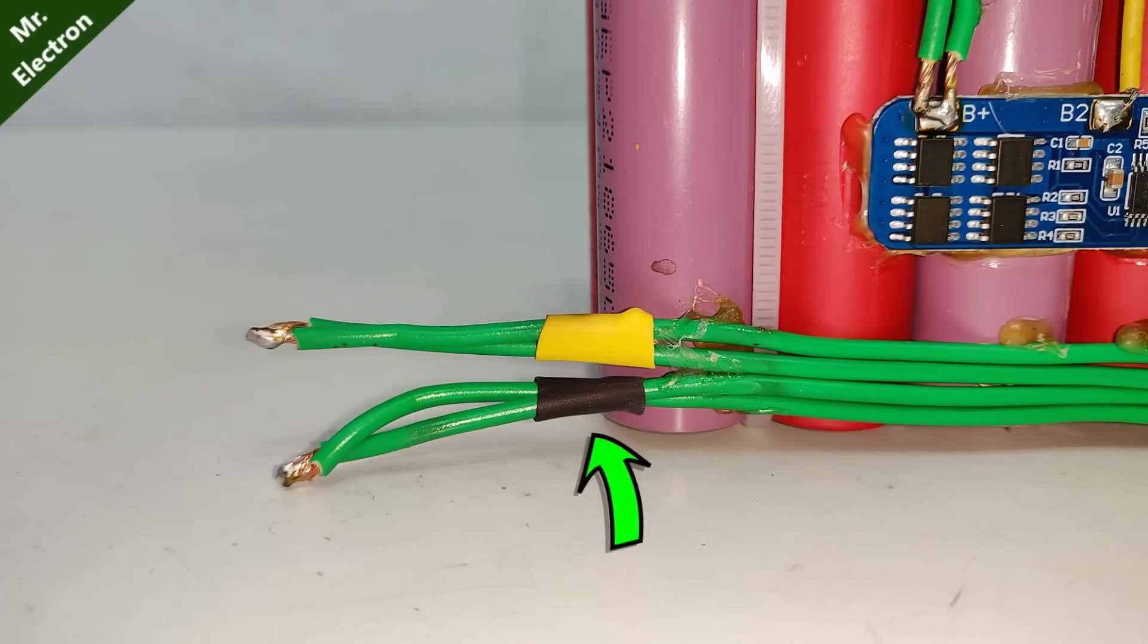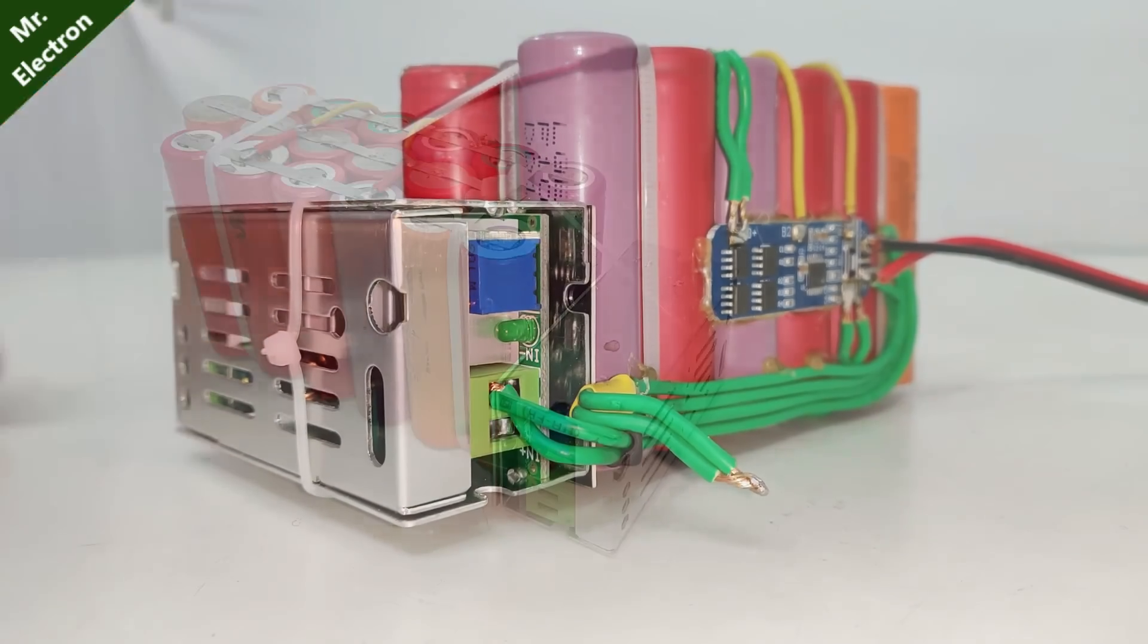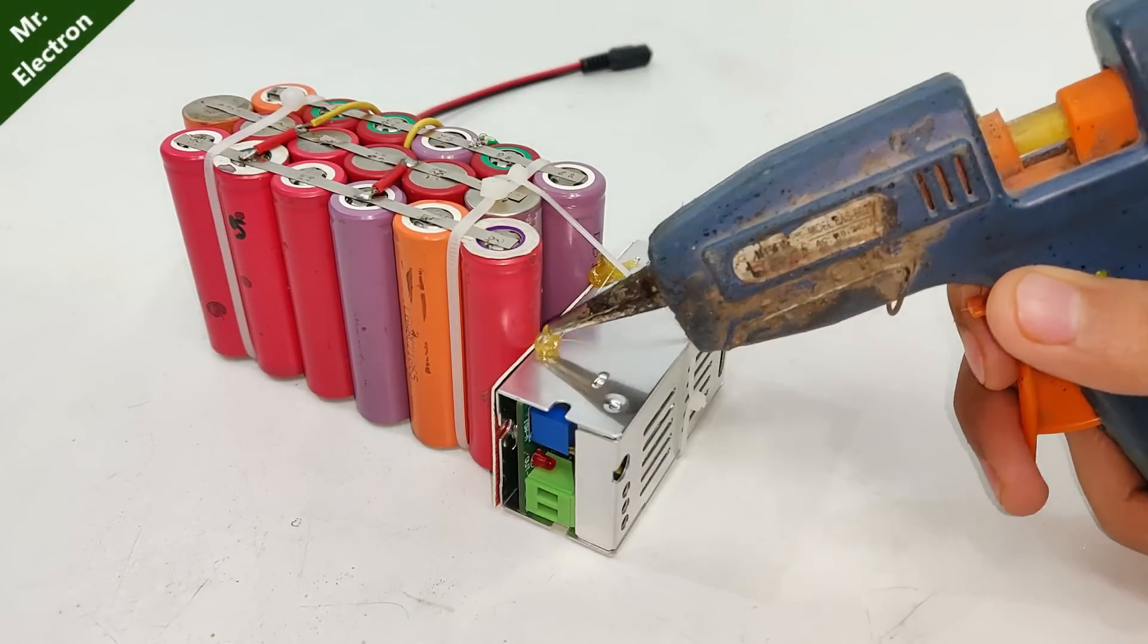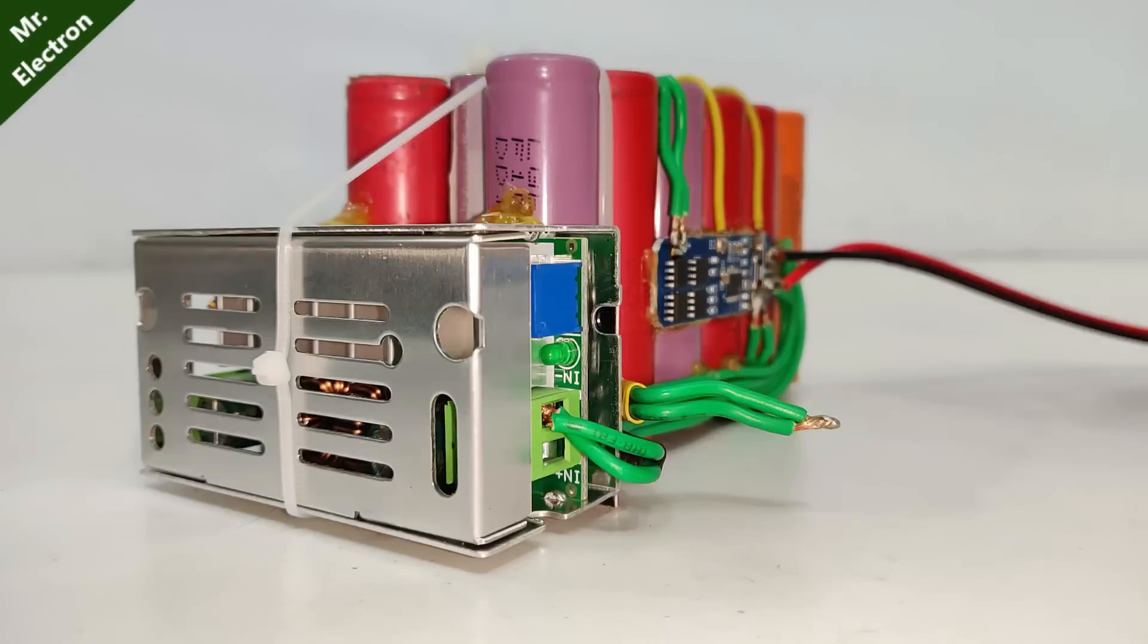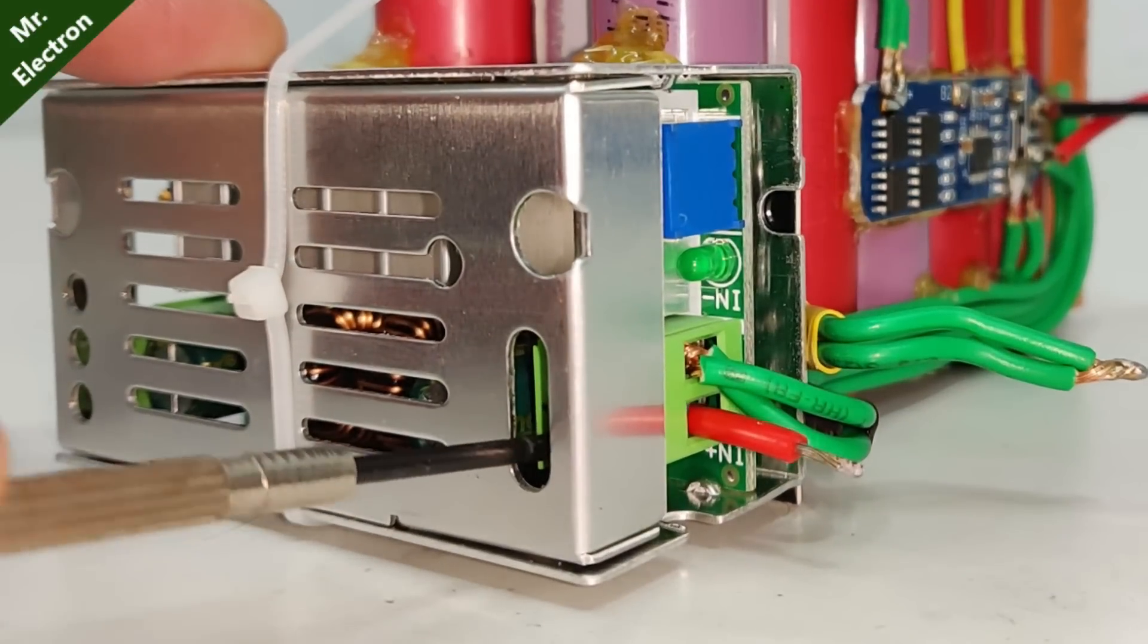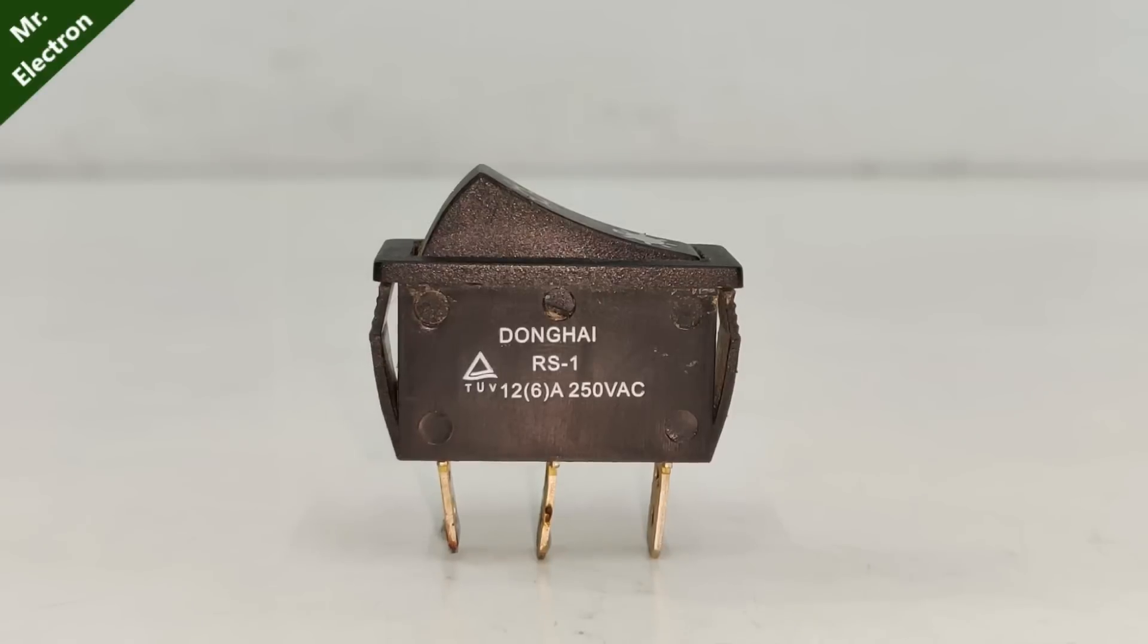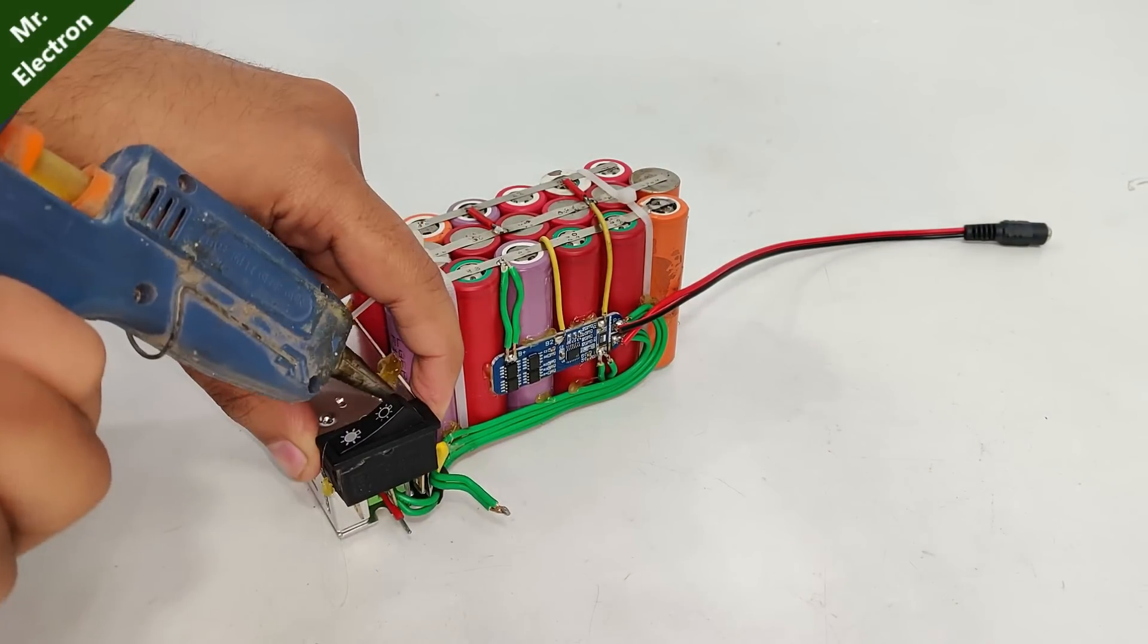After that take the black pair and connect it to the negative input terminal. Next use your hot glue gun to fix everything. Next you will need a red wire for connecting to the positive input side of the buck boost module.